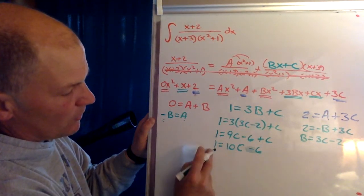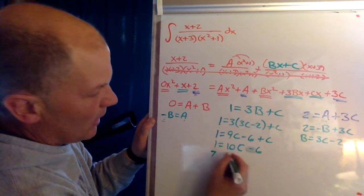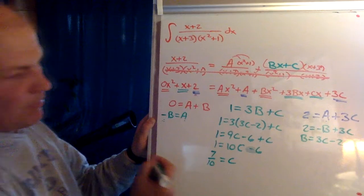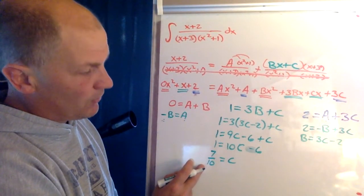Alright, 10c minus 6. Now I'm going to move the six over, so I'm going to add six to both sides. I'm going to get seven divided by 10 is c. Okay, so now over here we have 7 over 10 is c.